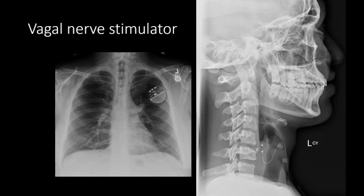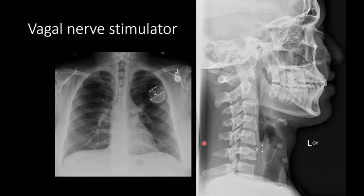Vagal nerve stimulators can be mistaken for a pacemaker because they have a similar-looking battery pack. However, these wires are heading cephalad towards the neck, and they are used for intractable epilepsy, treatment of resistant depression, or heart failure.